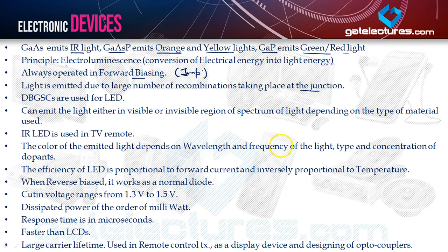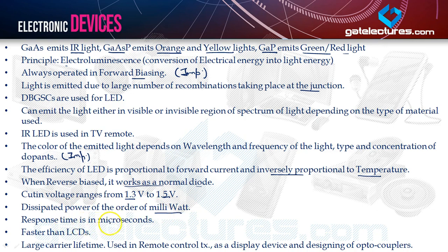The color of the emitted light depends on the wavelength, frequency of light, and the type and concentration of the dopant. The efficiency of the LED is proportional to forward current and inversely proportional to temperature. When reverse biased, it works as a normal diode. Cutting voltage ranges from 1.3V to 1.5V, and dissipated power is of the order of milliwatts. Response time is microseconds — it is faster than LCDs, which have response time in milliseconds, with power dissipated of the order of microwatts.